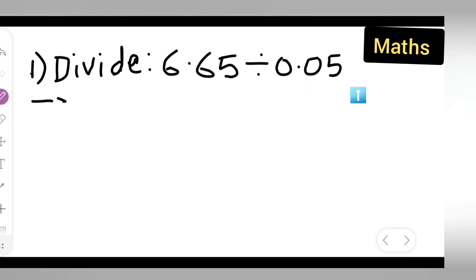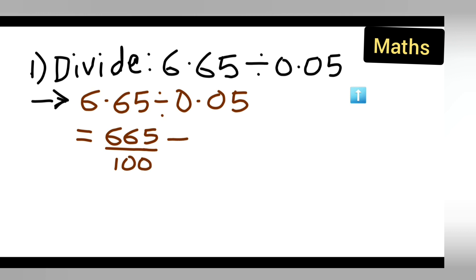Now how are we going to divide this? First write down 6.65 divided by 0.05. I am giving you step wise order. After that let us remove the decimal point: 665 upon 100 divided by 5 upon 100.